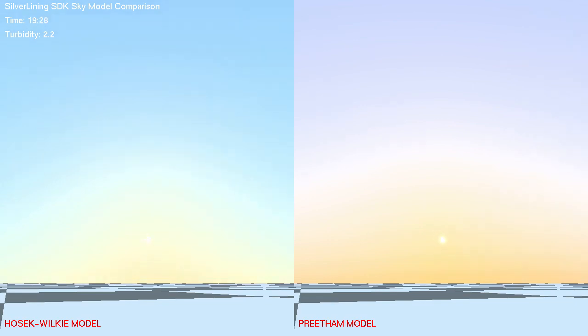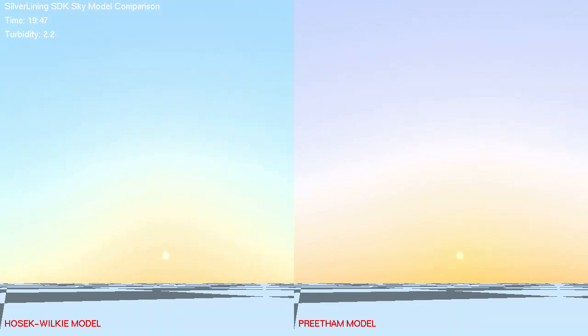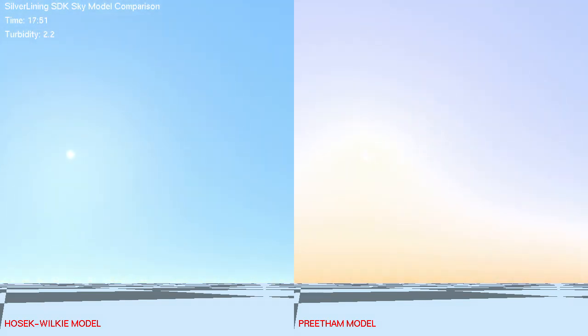Hosek-Wilke bills itself as being more realistic, and you can see for yourself how they compare here. During the day, you'll see that Hosek-Wilke is a much deeper blue, and that pinkish glow at the horizon is gone. You can brighten up that blue a bit if you want by increasing the gamma setting in Silver Lining.